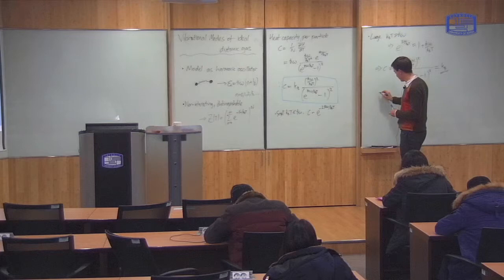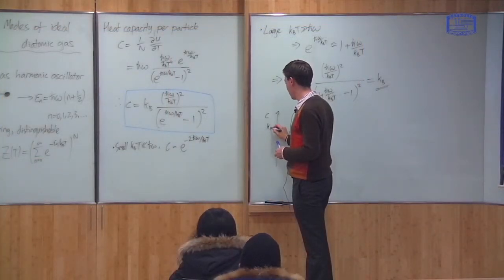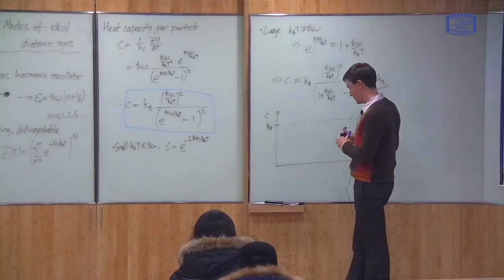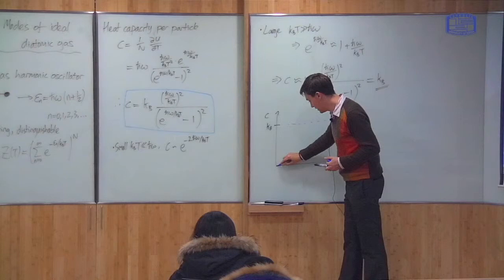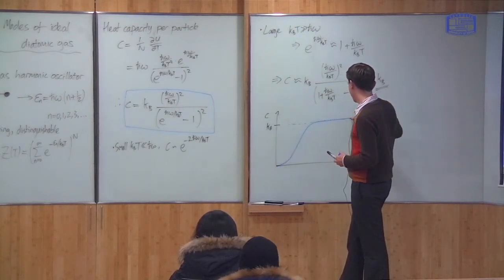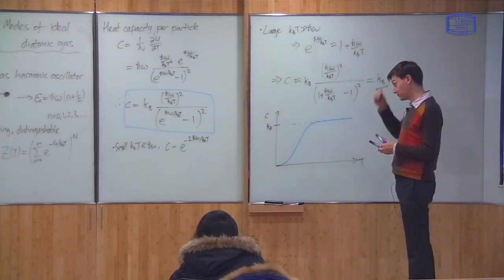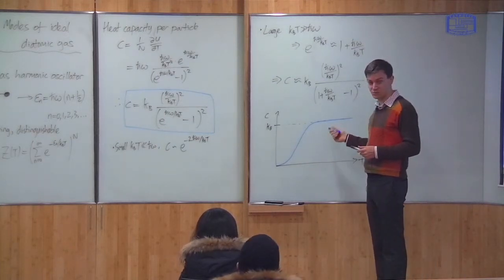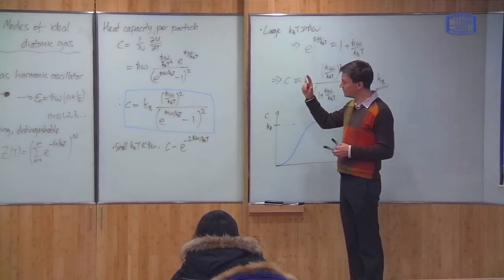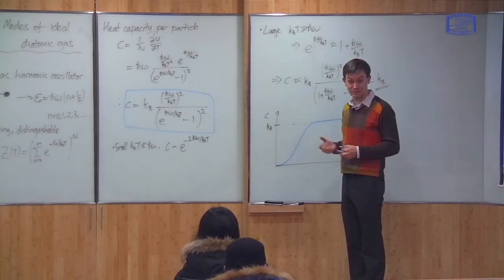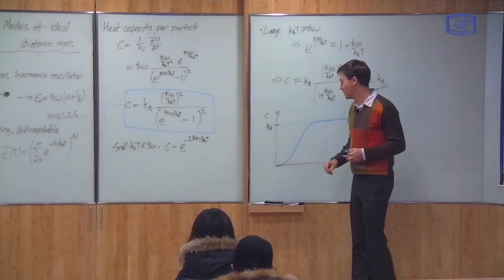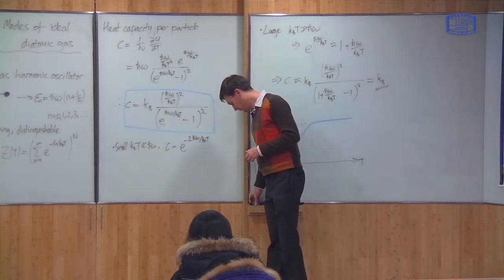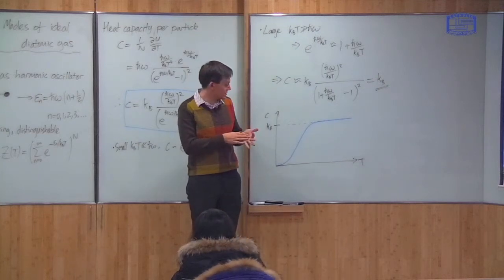If I put these two things together, I can finally draw a graph. Heat capacity has a limiting value of the Boltzmann constant. Heat capacity is a function of temperature. At small temperatures, it is exponentially suppressed. Then it rises. Then at high temperatures, it tends to the limit of k_B. This is the heat capacity of the vibrational modes of a diatomic gas. At low temperatures, there is virtually no energy stored in these modes. And at high temperatures, the energy increases proportional to T.